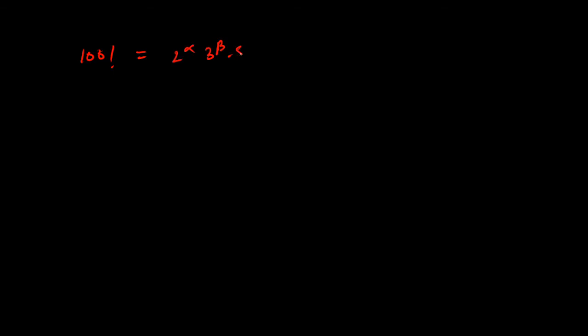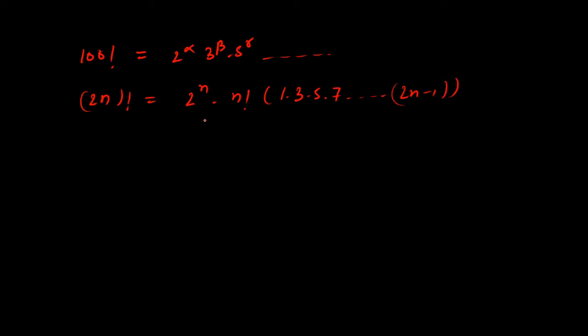Now I'll give insight into how we derived Legendre's formula. We start with: 100 factorial equals 2^alpha times 3^beta times 5^gamma and so on. The basic formula we use is: (2n)! equals 2^n times n! times (1 × 3 × 5 × 7 × ... × (2n−1)), where n is a natural number. Using this formula we derive the values of alpha, beta, gamma.